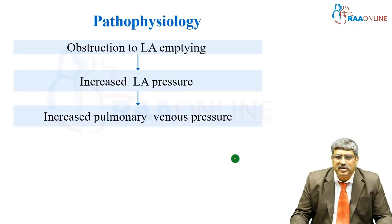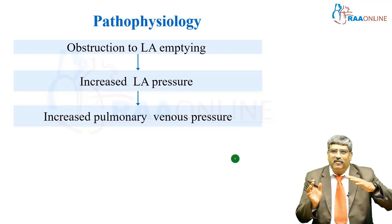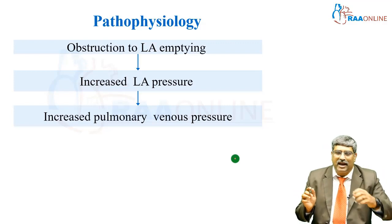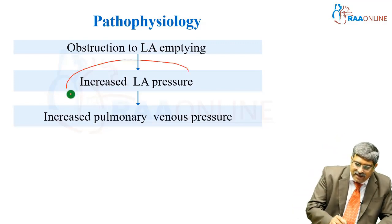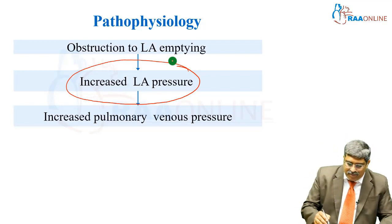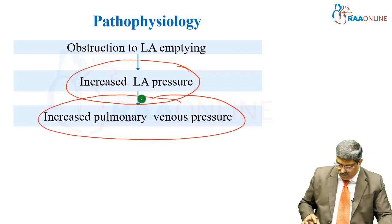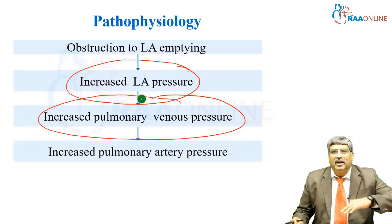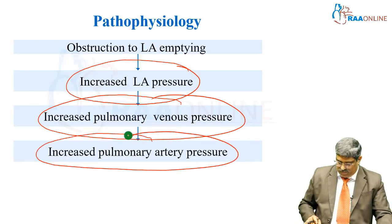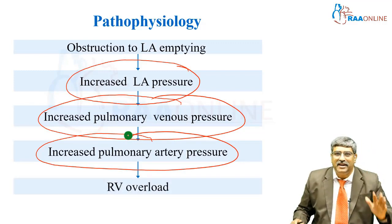Coming to pathophysiology, there is an obstruction at the mitral valve. LA content cannot go into the LV cavity, which increases LA pressure. This LA pressure will reflect back on the pulmonary venous system, and from there it goes back into the pulmonary artery.